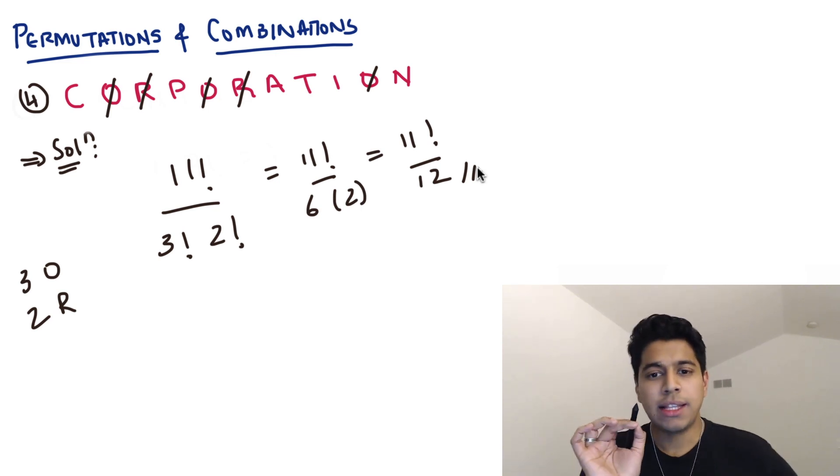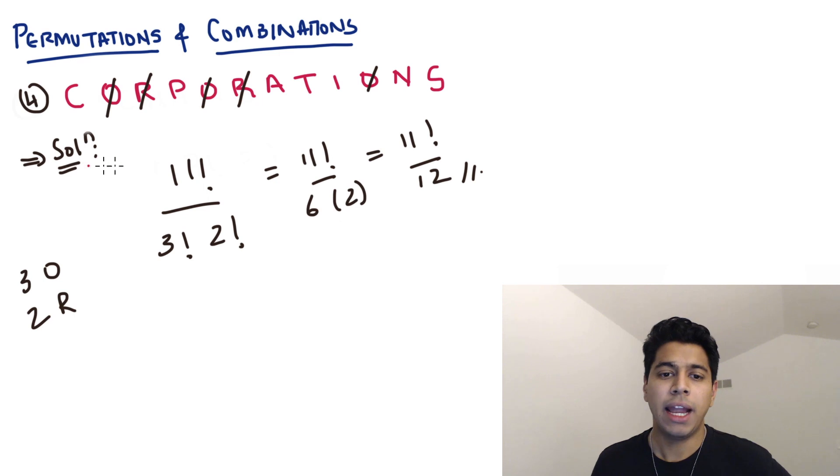Now something cool here that I'd like to just point out. Suppose the question was corporations. Now, it doesn't change anything in the denominator, because there are still just 3O's and 2R's, and this is single S. But the numerator will change. So now, if it was corporations, then what's going to happen is it's going to be 12 factorial. So what's going to happen is it's 12 letters now, correct? Not 11 because I added the S at the end. So now it's 12 factorial, divided by the 3O's. So 3 factorial and 2R's. So 2 factorial.